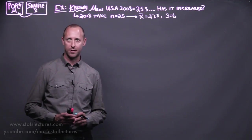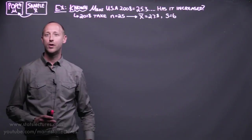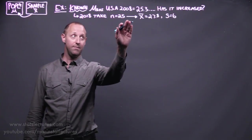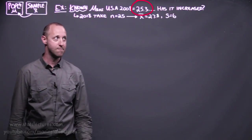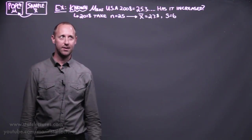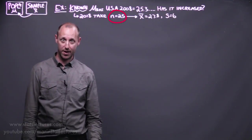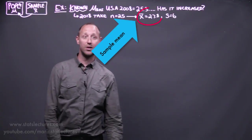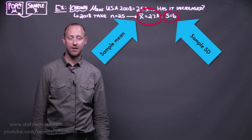So we're going to work with this example here. Suppose we know that the mean BMI in the United States in 2008 was 25.3, and we'd like to know if it's increased. So in 2018, we take a sample of 25 individuals, a random sample of 25 from the population. We find a sample mean of 27.8 and a sample standard deviation of 6.